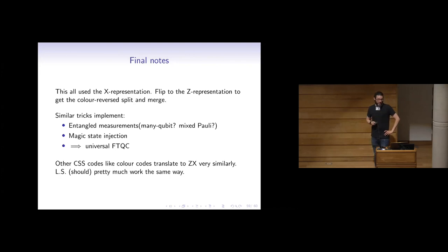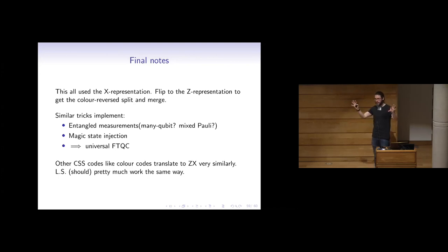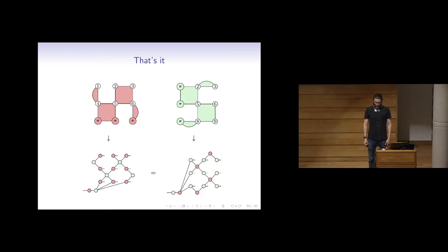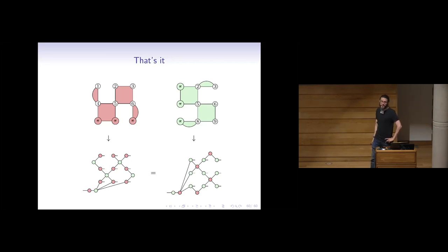Other CSS codes, like the color code, look pretty much exactly like this. I write down the CSS code, get the Z and X representations, and both geometrically look like what you'd read in the papers. Lattice surgery should work pretty much the same way. There's some low-hanging fruit in just translating existing surface code results into ZX and playing around with these diagrams — maybe we'll come up with some new results as well. In any case, I think you can grok it a bit better. Thanks.